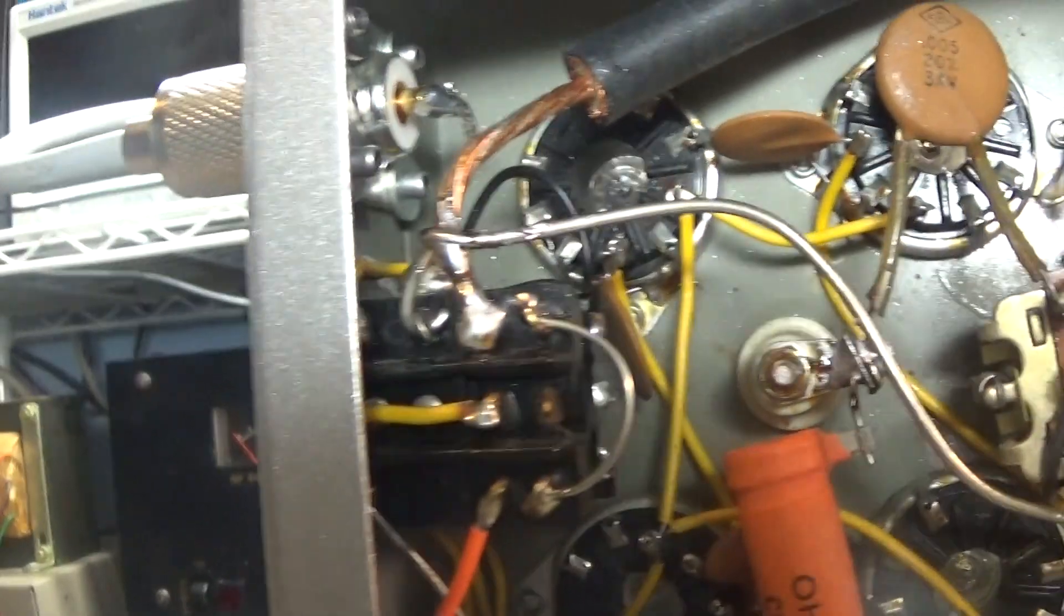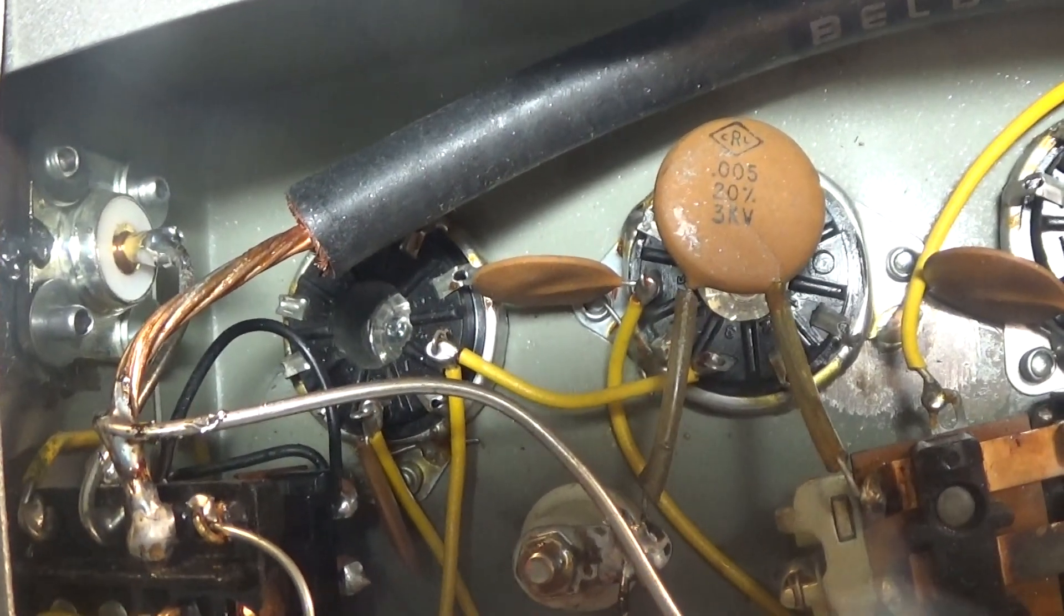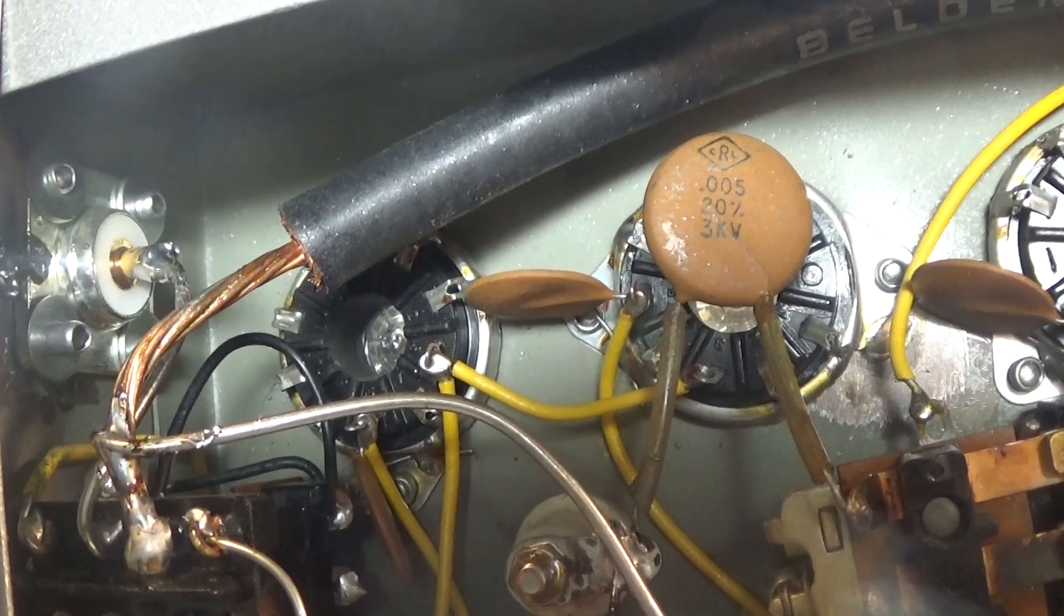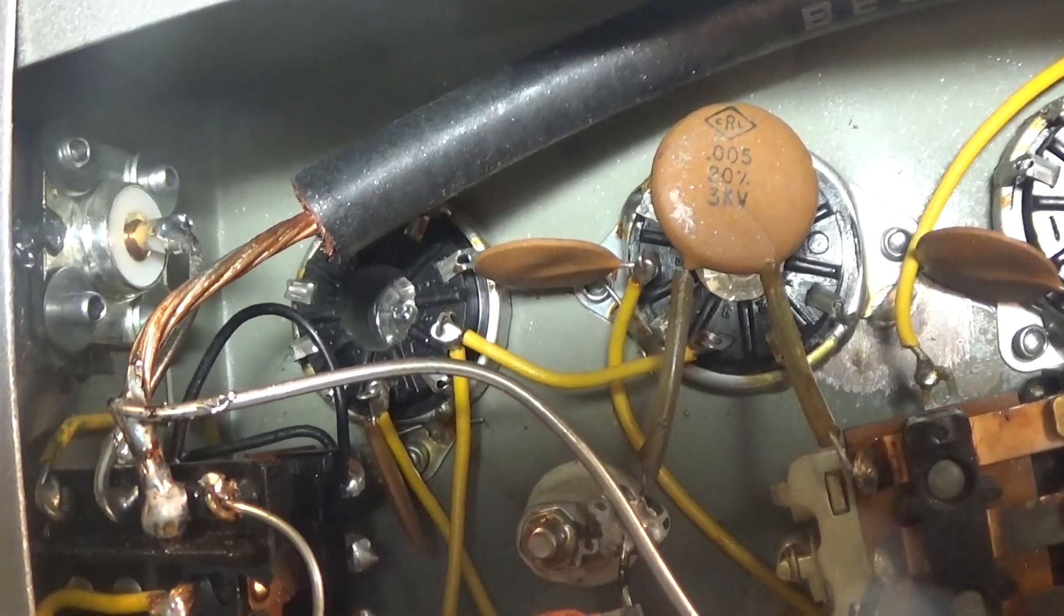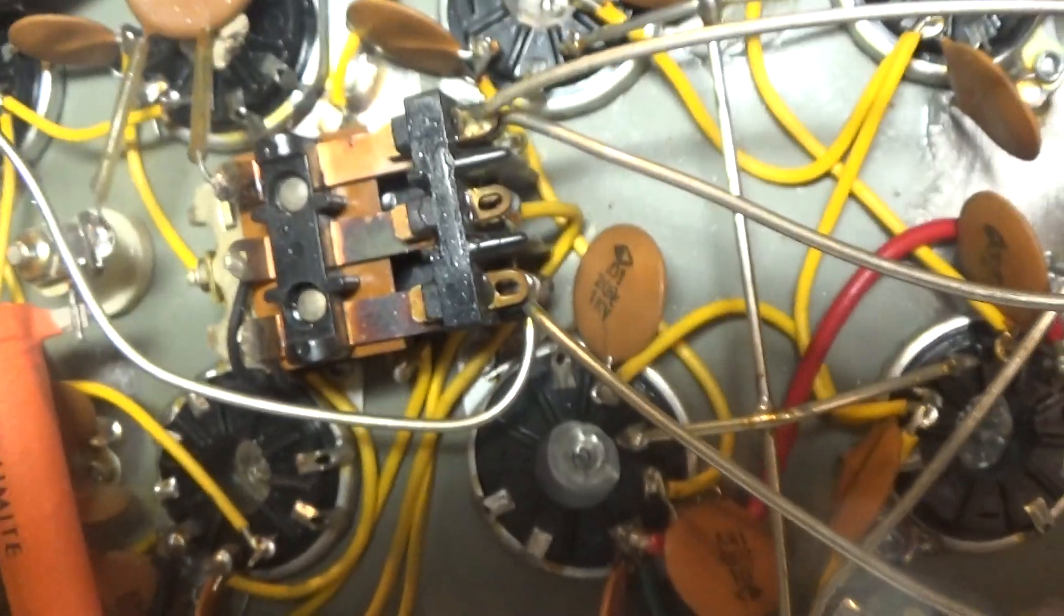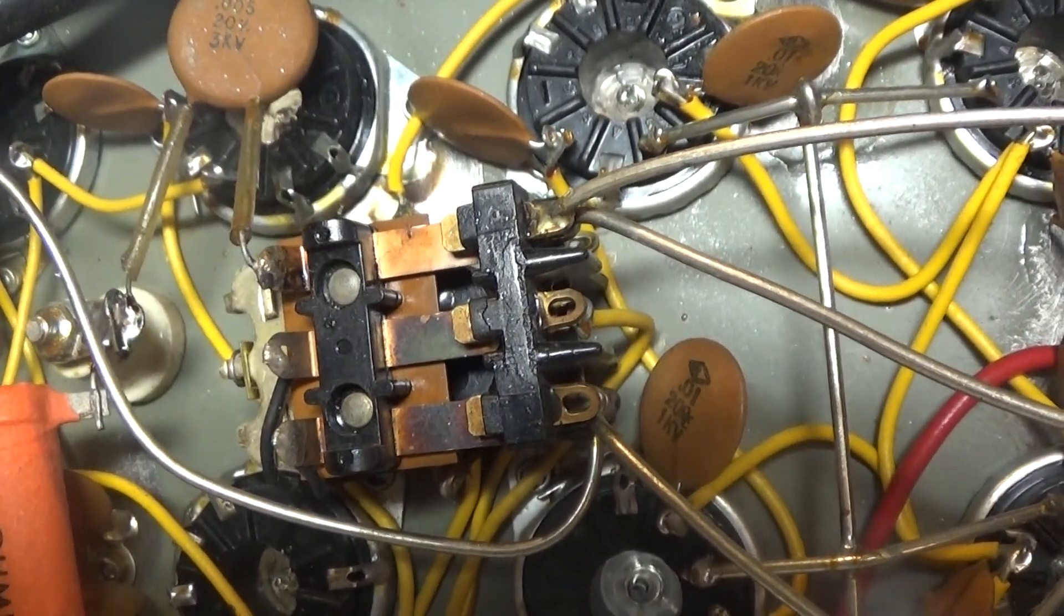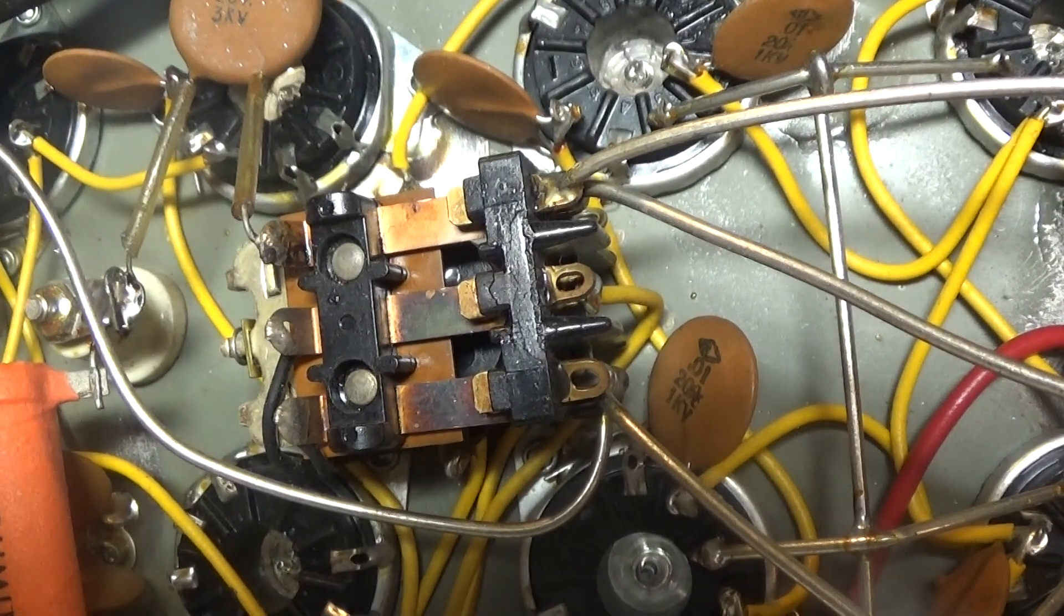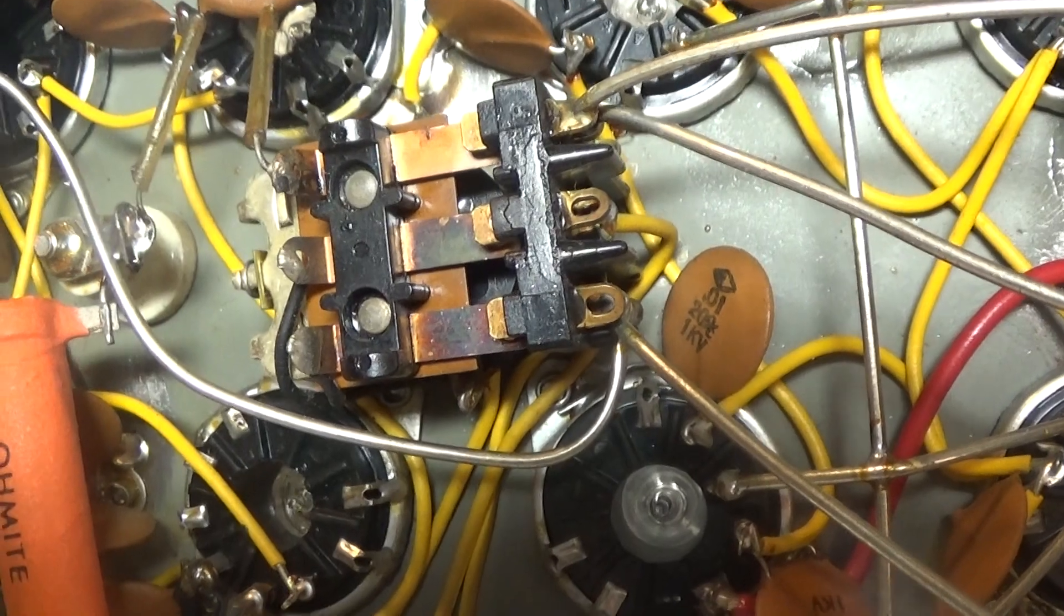The big coax is the output of the six final tubes, and the smaller silver one goes to this relay. This relay goes to the high and low power switch. On high you got the normal four tubes driving six tubes. On low, in this configuration, you are only working off the four driver tubes.